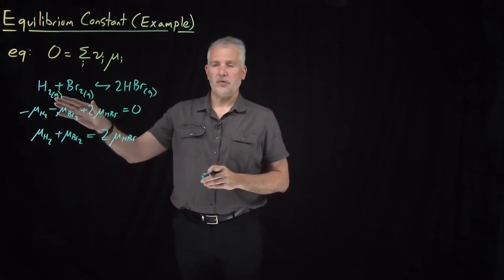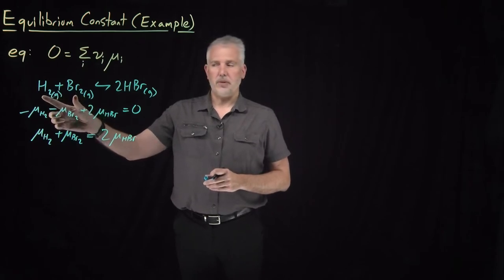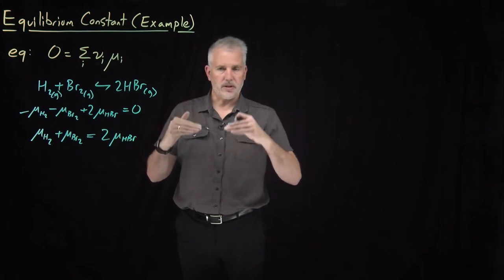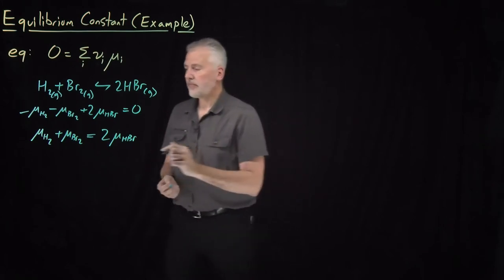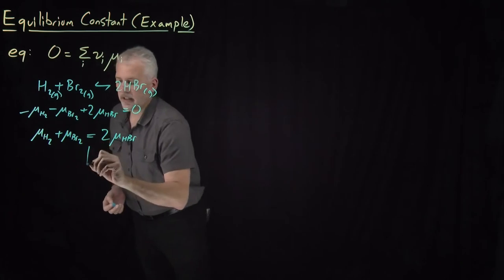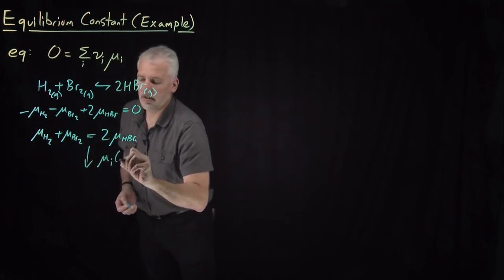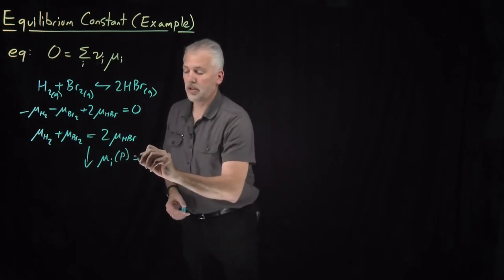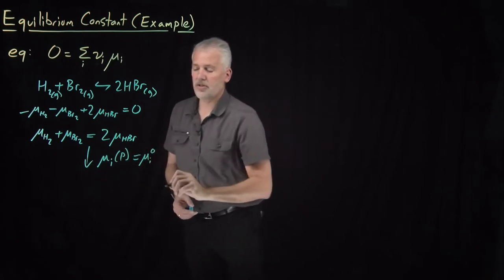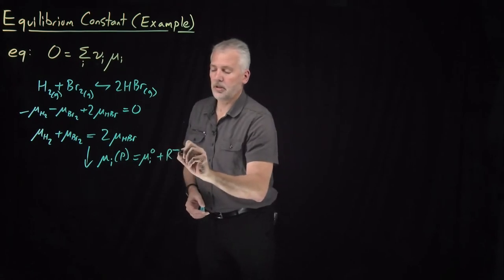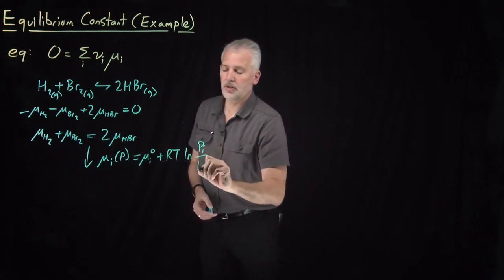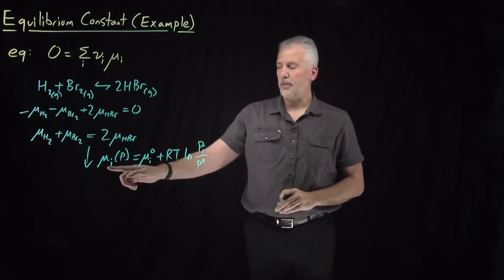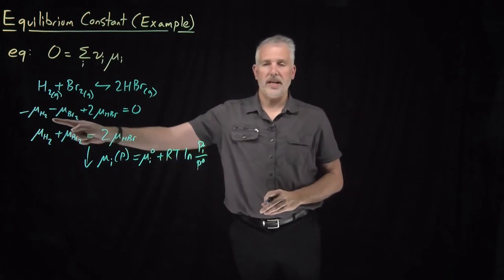As this reaction goes forward, I destroy some H₂ and Br₂ and generate some HBr, so the amounts of each reactant and product are changing and their pressures might be changing. Recalling that the chemical potential of an ideal gas at a particular pressure equals its standard state chemical potential plus RT times the natural log of its partial pressure relative to standard pressure — that's an expression I can use to write down the chemical potential of each of these gaseous species.